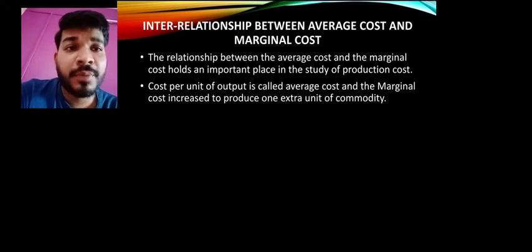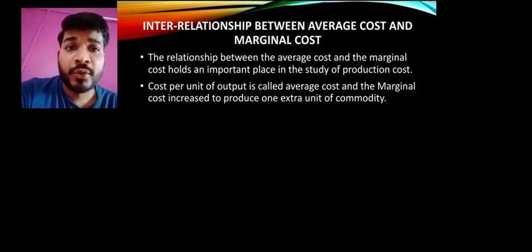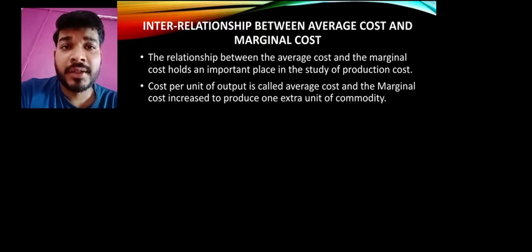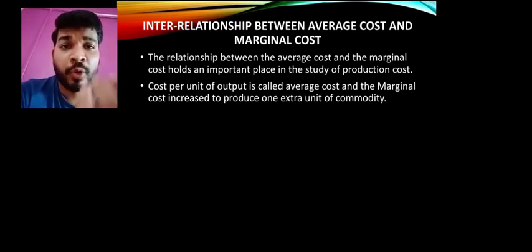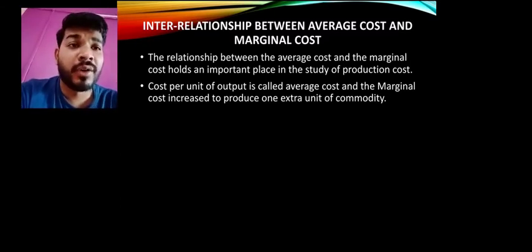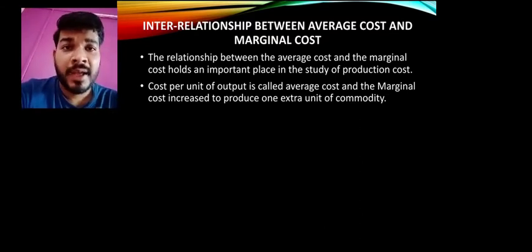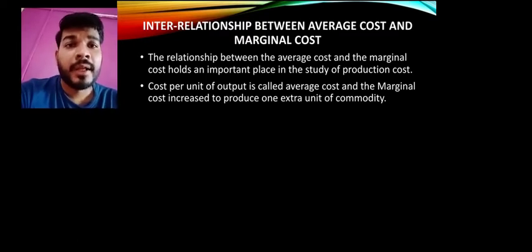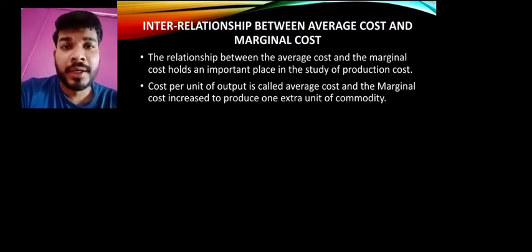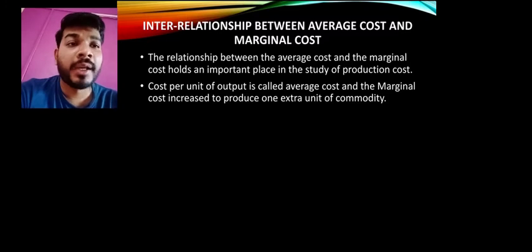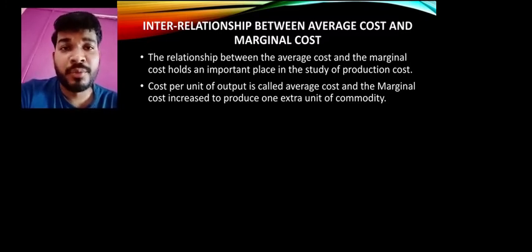The cost per unit of output is called average cost. We take variable cost plus fixed cost, divide by total production, and we get the per unit cost — that is average cost. Marginal cost is the cost incurred to produce one more extra unit. For example, if we have produced 100 pens, the cost of producing the 101st pen is the marginal cost — that is, total cost of 101 units minus total cost of 100 units.